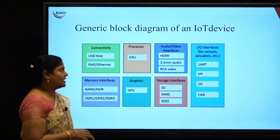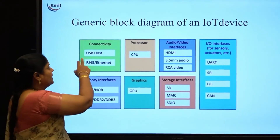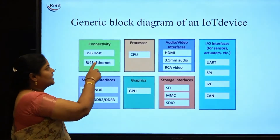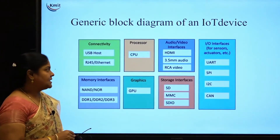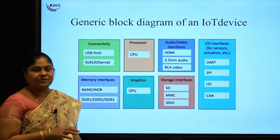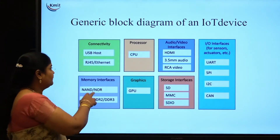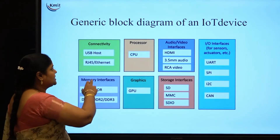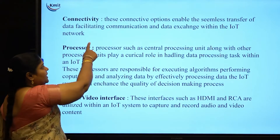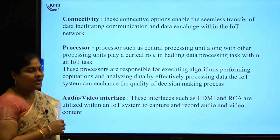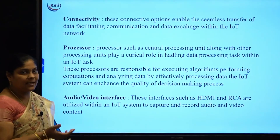We will continue from the last topic. Here we will start with the general block diagram of an IoT device. There are different types of interfaces in each IoT device. The first type of interface is the connective interface. This connective interface enables us to transfer data by facilitating communication and data exchange between IoT systems.